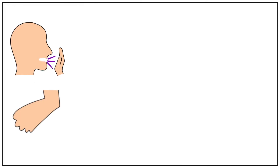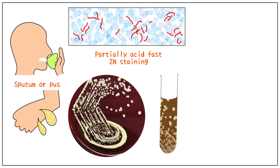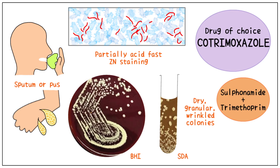Depending on the location of infection, sputum or pus is used as a specimen for laboratory diagnosis. ZN staining is used, where we see partially acid-fast bacteria. Brain-heart infusion agar or Sabouraud dextrose agar are used to culture Nocardia. It forms dry, granular, wrinkled colonies on the media.